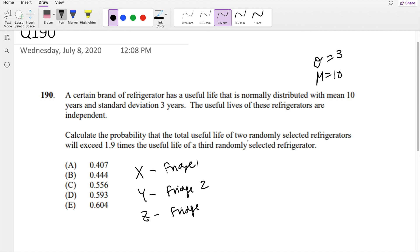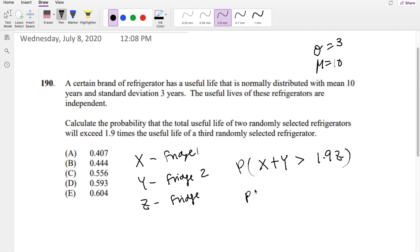So if I randomly pick two of these, let's say I pick X and Y, what is the probability that these two combined will be greater than the third fridge, Z, by 1.9 times? That's what it's saying. And because we know this is a normal distribution, we can just put everything to the one side: X plus Y minus 1.9Z is greater than 0.